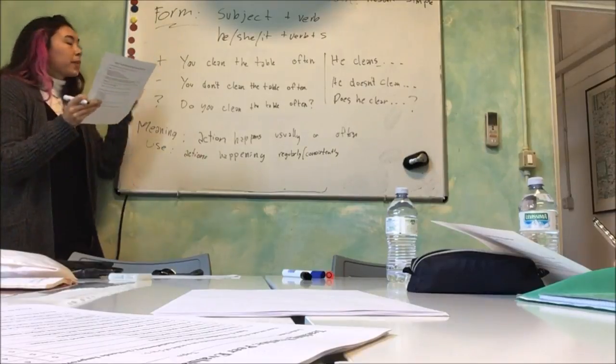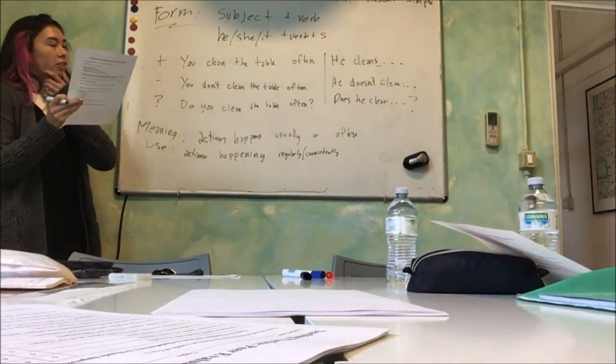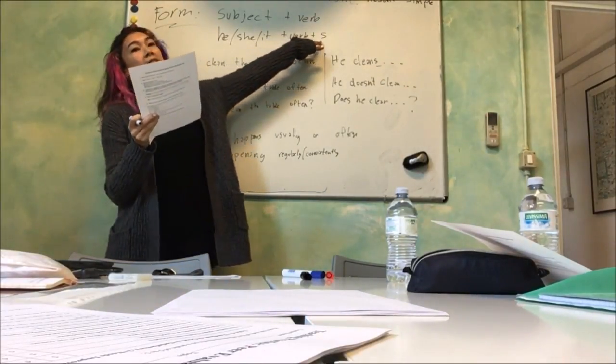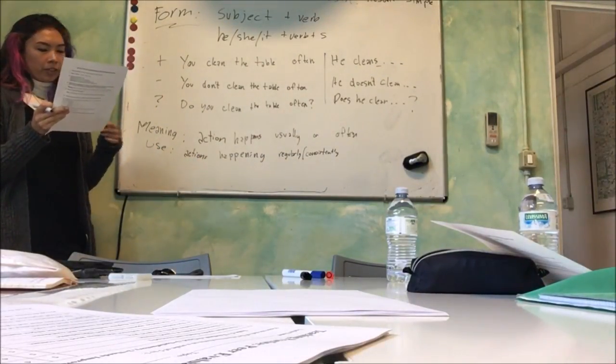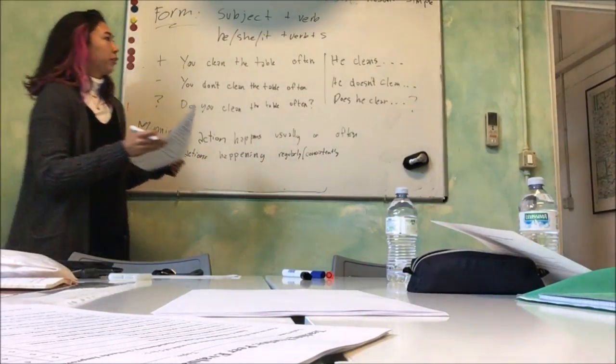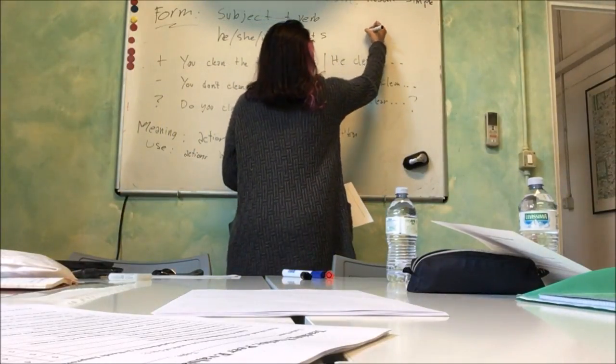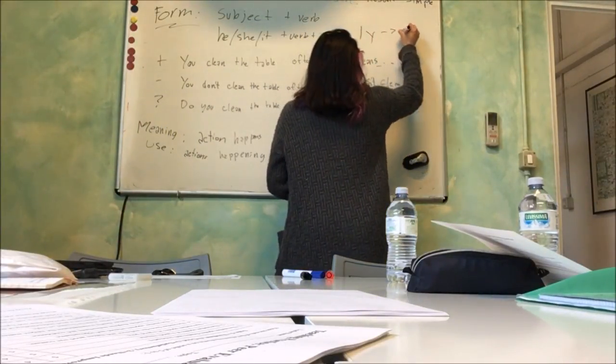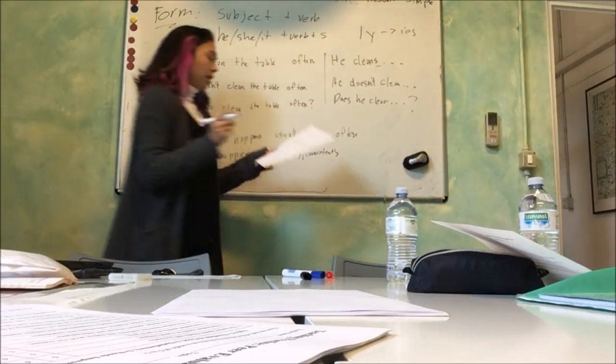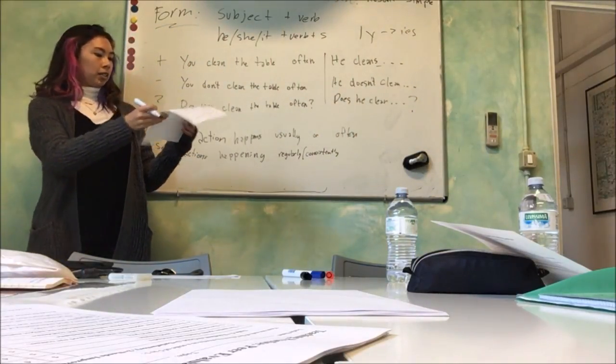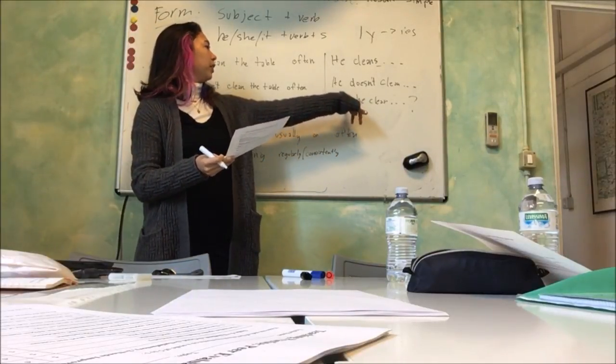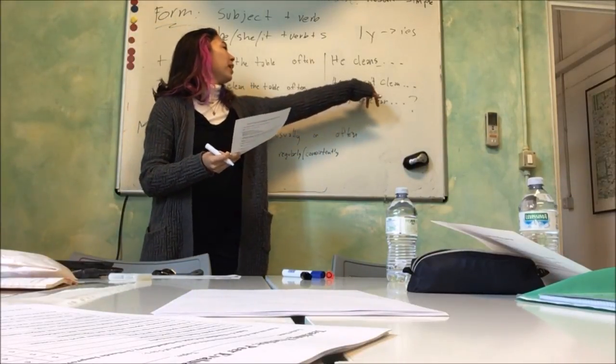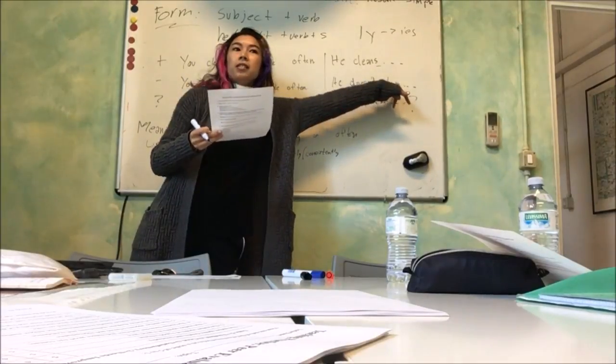So one thing I might want to point out for my students is remember that when we have this third person we add the S, but everything else we just have the infinitive form of the verb. And then if the verb ends in a Y and there's a consonant before it, you change it to I-E-S. And then of course, does comes to the front word for the interrogative, and it doesn't have the verb ending, so this stays infinitive.